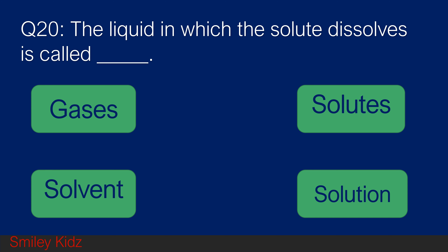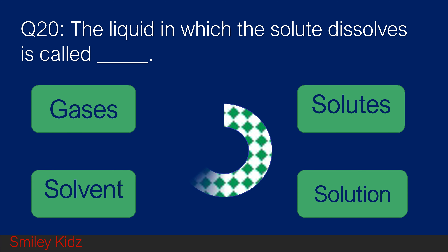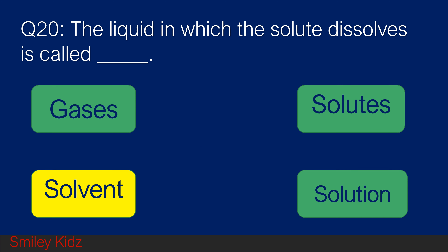Question number 20. The liquid in which the solute dissolves is called blank. Option A gases, option B solutes, option C solvent, and option D solution. Your time starts now. And your time is up. The right answer is solvent. The liquid in which the solute dissolves is called solvent.